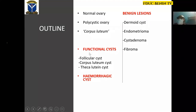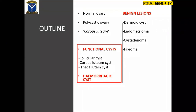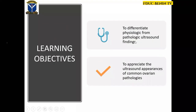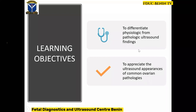Functional cysts are the commonest benign cysts encountered in clinical practice, closely followed by hemorrhagic cysts. Hemorrhagic cysts are the leading cause of acute pelvic pain. These two groups of cysts will resolve spontaneously, but other benign lesions will not resolve without intervention. At the end of this exercise, we should be able to differentiate between physiological and pathological ultrasound appearances, and appreciate the classic ultrasound appearances of common benign ovarian lesions.